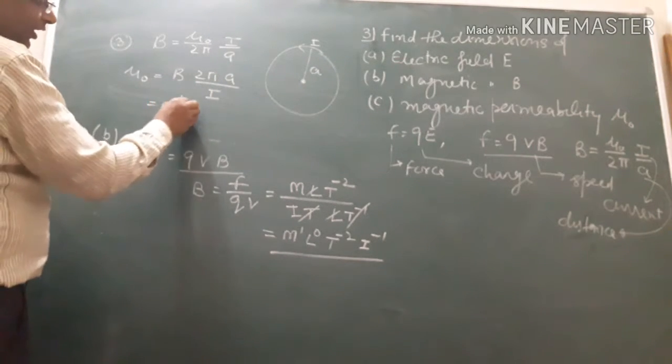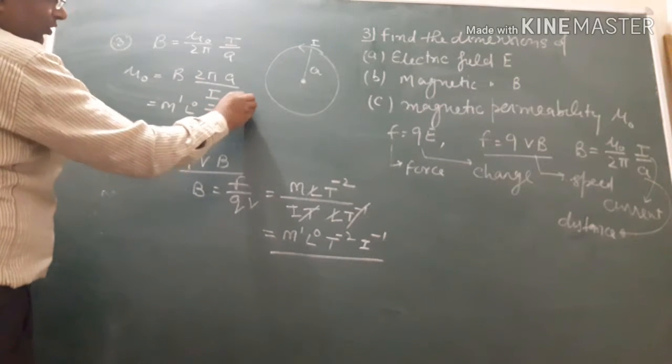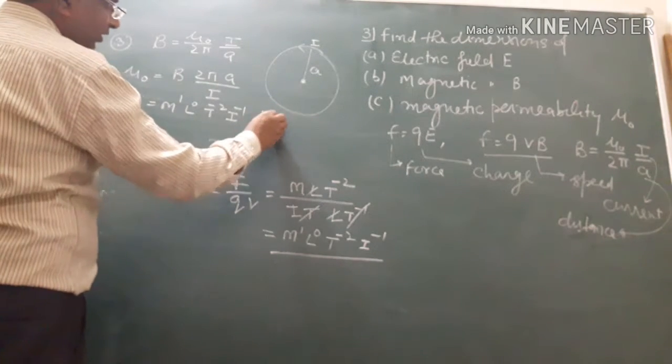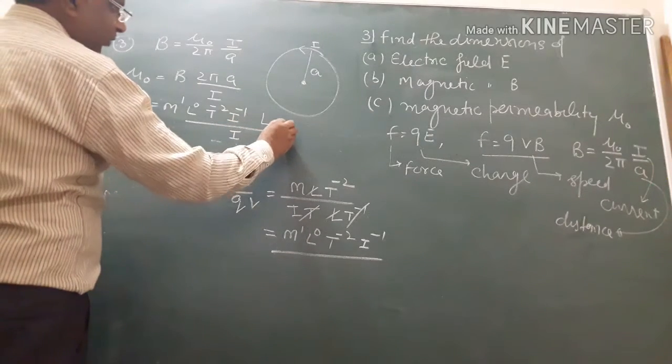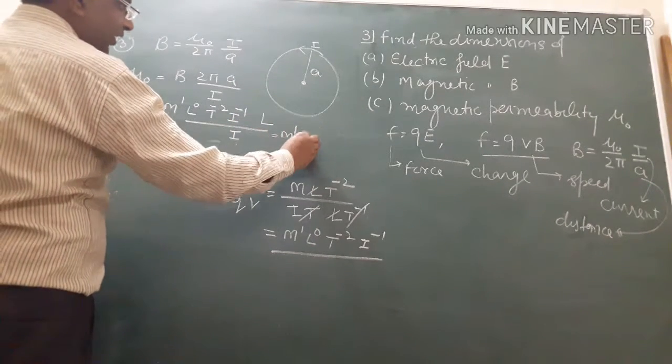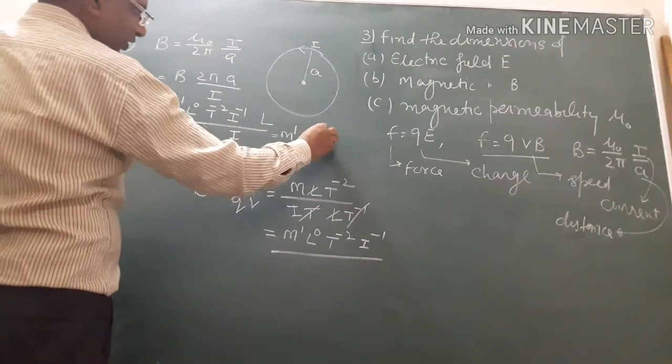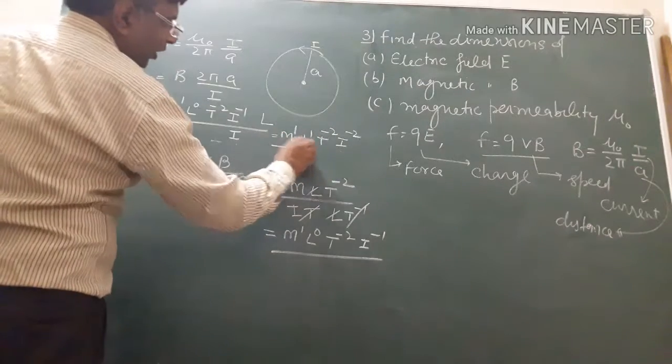B has dimensions M to power 1, L to power 0, T to power minus 2, I to power minus 1. Two pi is dimensionless. A is radius, any length L to power 1, upon I. The formula gives L to power 1, T to power minus 2, I to power minus 2. This is the answer.